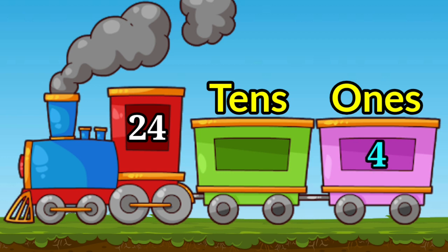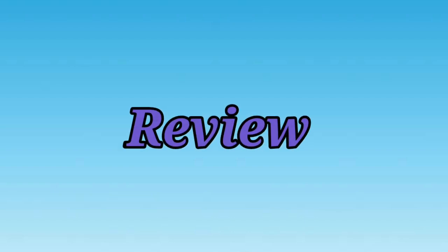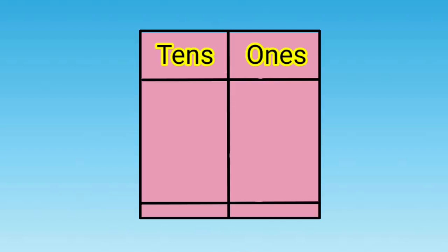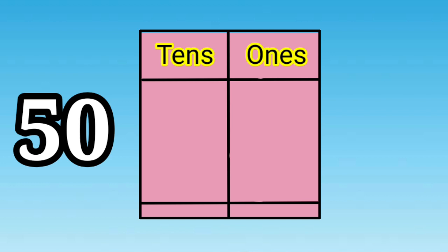Children, let's do a quick review. Look, we have five zero, fifty. So the digit zero will go in which place? It will go in ones place, and five will go in tens place.